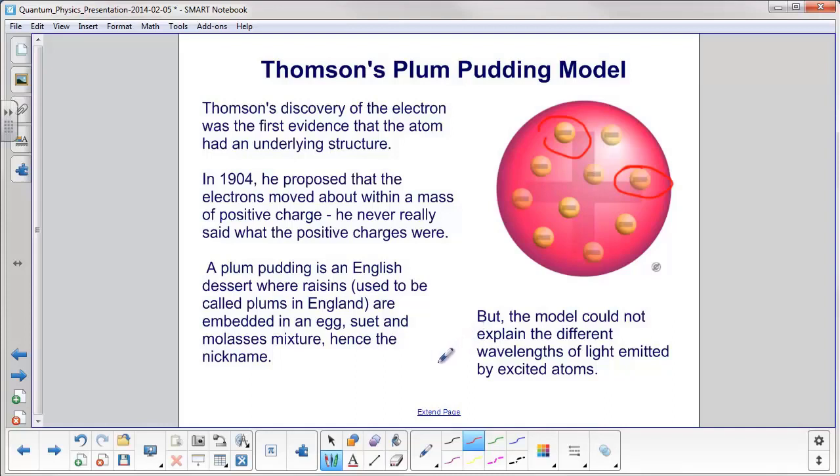Now, for people here in the U.S., that doesn't make a whole lot of sense until you realize that it's an English dessert where raisins, which used to be called plums in England, are embedded in an egg, suet, and molasses mixture, hence the nickname, plum pudding.